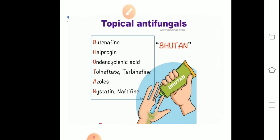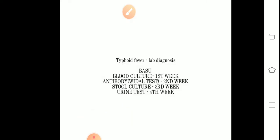Next, topical antifungals. You remember this by the mnemonic BHUTAN: B butenafine, H haloprogin, U undecylenic acid, T tolnaftate, A azoles, and N nystatin. We basically use nystatin but you may read all the names by the mnemonic easily, by BHUTAN.